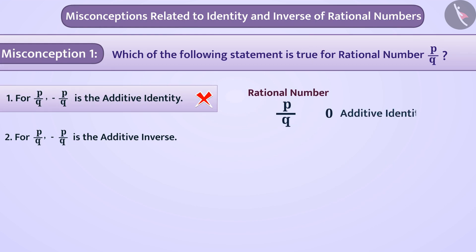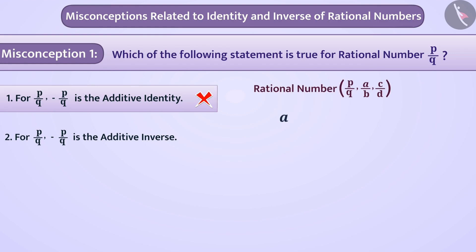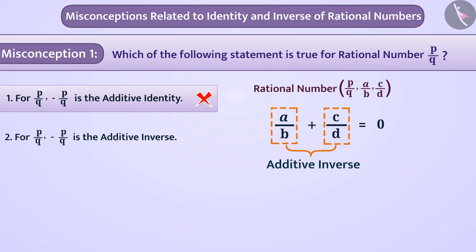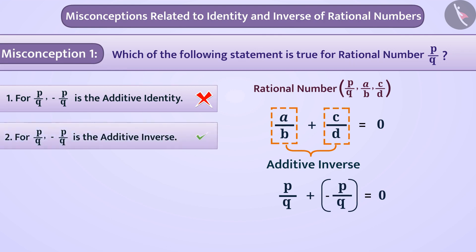Remember that 0 is the additive identity for a rational number because adding 0 to any rational number makes no change in its value. If the addition of rational number a/b with c/d is 0, then they are additive inverses of each other. Since p/q + (-p/q) = 0, the additive inverse of p/q is -p/q. Therefore, option 2 is the correct answer.